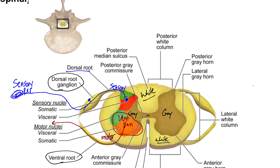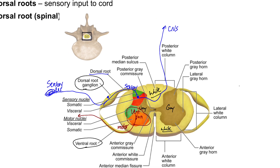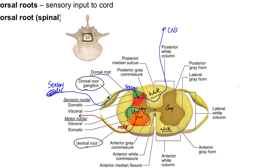That cell body of the second neuron is going to go through the white matter of the spinal cord, it'll decussate and cross over the midline at some point, and eventually make its way up to the CNS. If this is a touch receptor, it would make its way through the thalamus and then eventually to the primary somatosensory cortex.